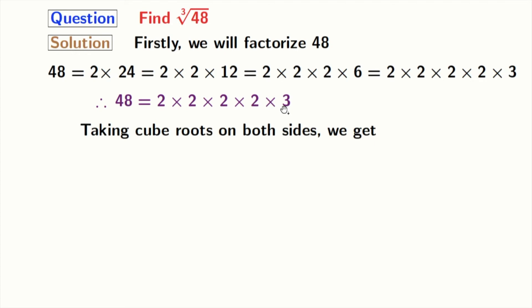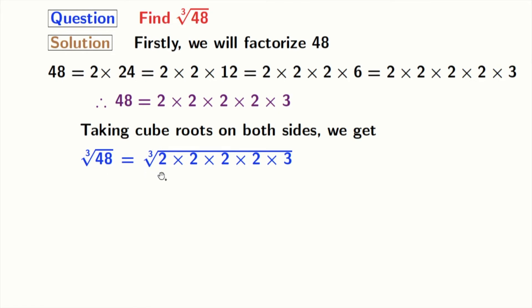Taking cube root on both sides, we get cube root of 48 is equal to cube root of 2 times 2 times 2 times 2 times 3.